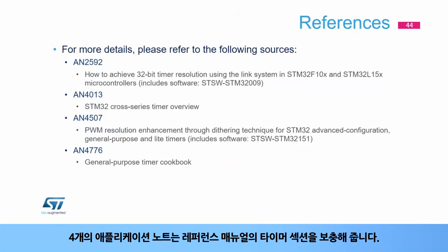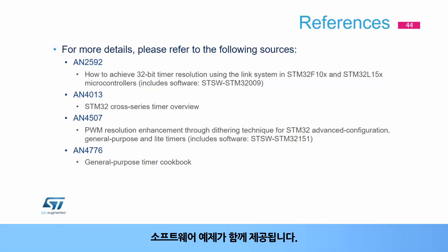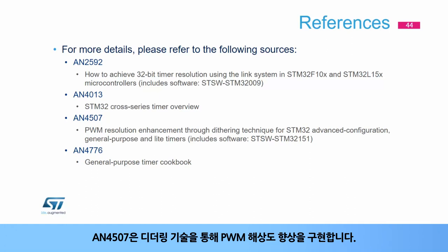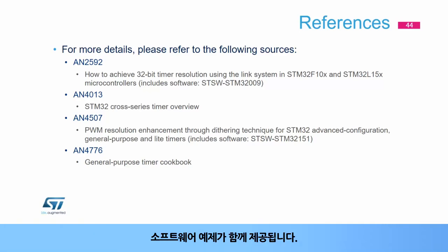Four application notes complement the timer sections in the reference manual. AN2592 gives a practical implementation of a 32-bit timer made from two synchronized 16-bit timers, useful for understanding the overall timer synchronization mechanism, and comes with a software example. AN4013 provides a more detailed overview of all timer features and available firmware examples. AN4507 presents an implementation of PWM resolution enhancement by means of dithering techniques, with a software example. AN4776 starts with reminders on timer operation principles and contains a collection of examples for standard timer use cases, also with a software example.